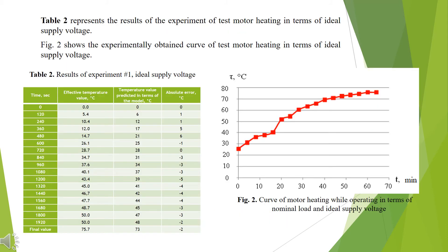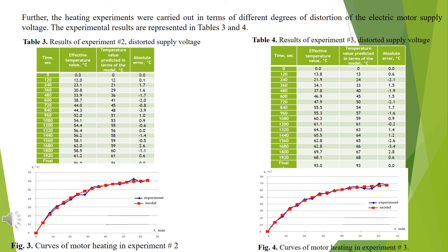Table 2 represents the results of the experimental test of motor heating under ideal supply voltage conditions. Figure 2 shows the experimentally obtained curve of test motor heating under ideal supply voltage. Further, the heating experiments were carried out under different degrees of distortion of the electric motor supply voltage. The experimental results are represented in Tables 3 and 4, and Figures 3 and 4 show the curves of motor heating in experiments number 2 and number 3.